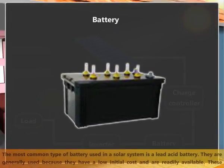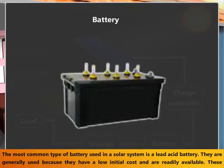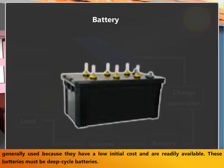Battery. The most common type of battery used in a solar system is a lead acid battery. They are generally used because they have a low initial cost and are readily available. These batteries must be deep cycle batteries.